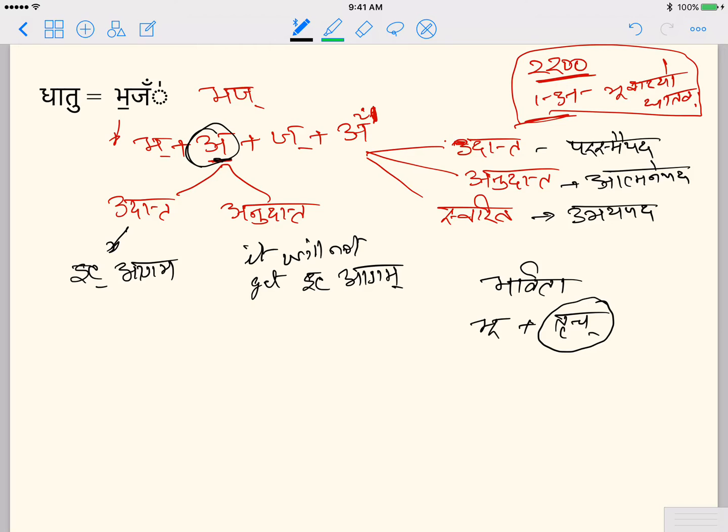And if you look at the sutra, there is a sutra 3.4.113 called tingshit sarvadhatukam. So ting - those 18 tingas are called sarvadhatuka. And shit - anything that has a sha as it. So like shap, the sha disappears and pa disappears, you're left with a. So a is called shit. Similarly, shyan - sha disappears, ya disappears, na disappears, and you're left with a. So that is also called shit.